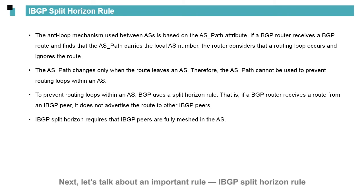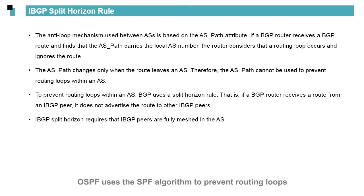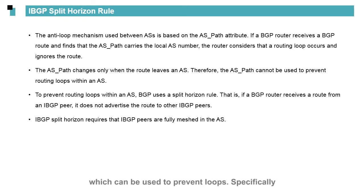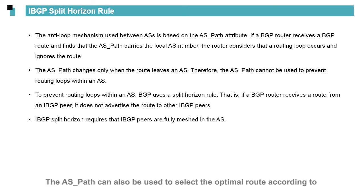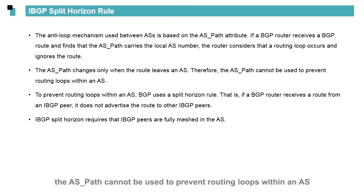Next, let's talk about an important rule. To prevent routing loops, routing protocols have their own anti-loop mechanisms. For example, RIP has split horizon and poison reverse mechanisms. OSPF uses the SPF algorithm to prevent routing loops. In BGP, each route carries an ASPath attribute, which can be used to prevent loops. Specifically, if the ASPath contains the local AS number, a loop is detected and the involved route is ignored. The ASPath can also be used to select the optimal route according to its length. However, the ASPath changes only when the route leaves an AS, so it cannot prevent routing loops within an AS.